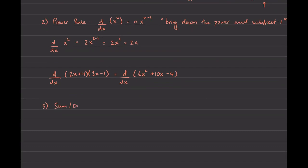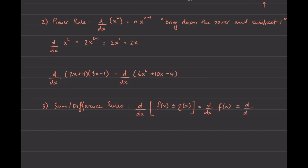Then we have the sum and the difference rules. These are quite simple: if you have to find the derivative of a sum or difference of two functions, you can find the derivative of each function separately and then add or subtract them. This is similar to the limit property where the limit of f plus g equals the limit of f plus the limit of g, as long as both limits exist. Here, you can take the derivative of f and g separately and add them — as long as both individual derivatives exist. If either doesn't exist, we can't apply the rule.